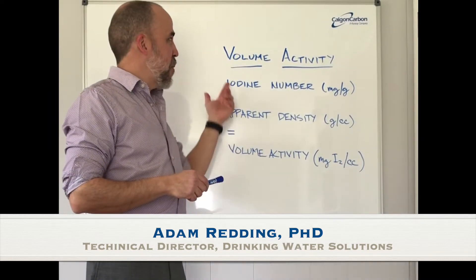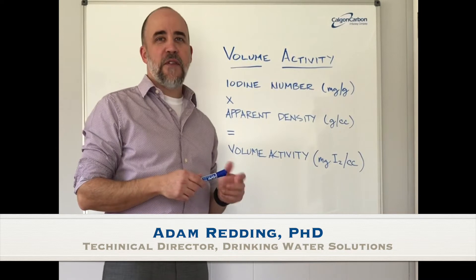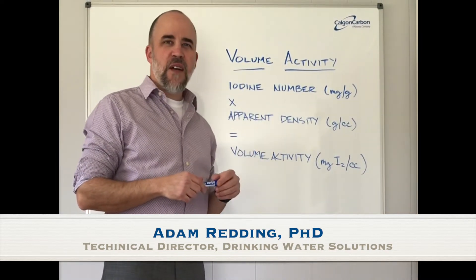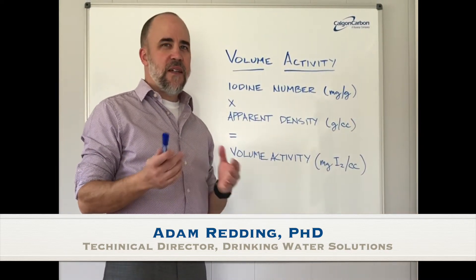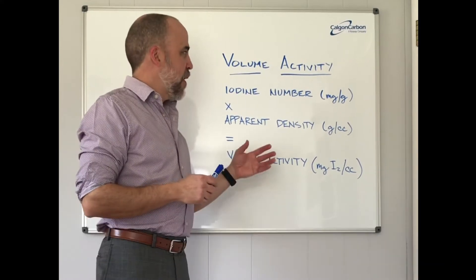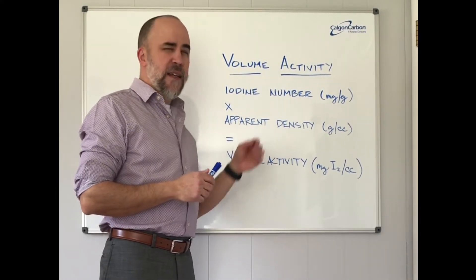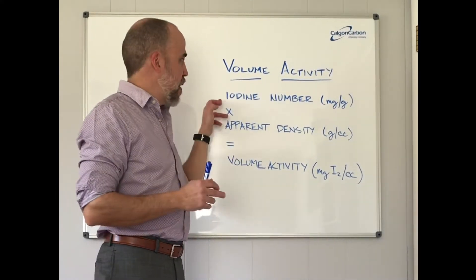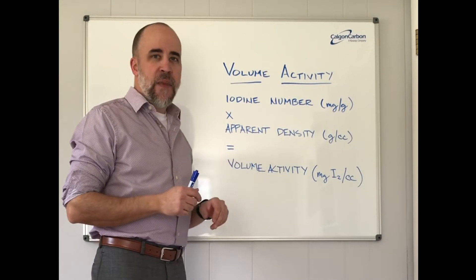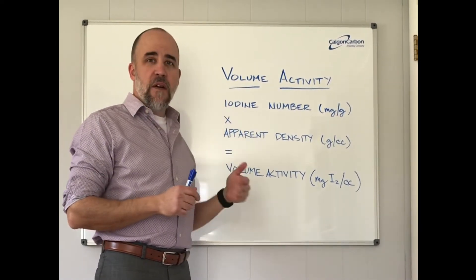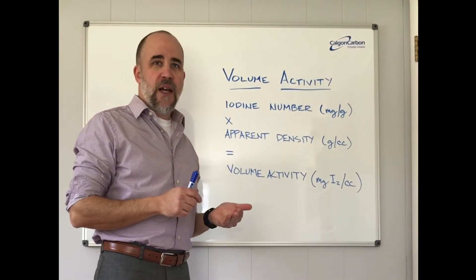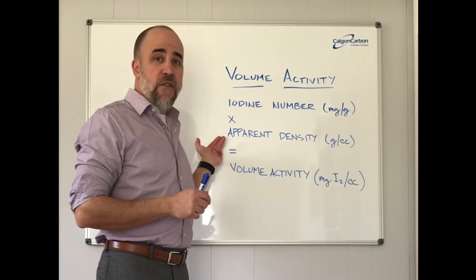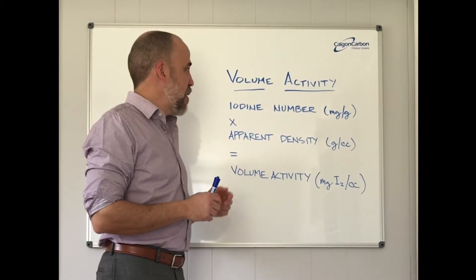I'd like to talk to you today about a concept called volume activity. This is something that seems to be somewhat understood, but not terribly well applied. I think we can get across it pretty simply with two ASTM methods. The first is pretty familiar to most people that have applied carbon — it's the iodine number. The second, also quite familiar, is the apparent density.